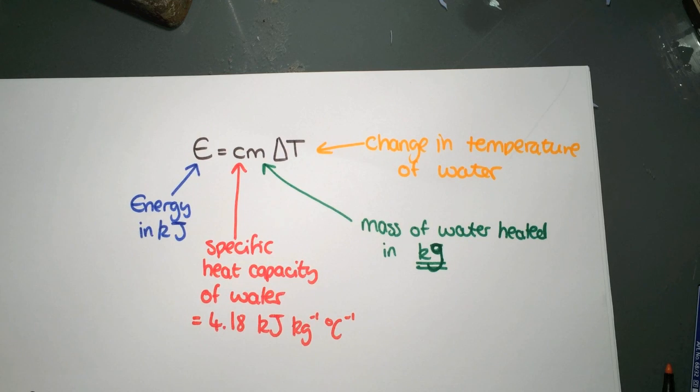The M is the mass of the water that is heated, and this is always in kilograms. This is very important. This is not the mass of the alcohol that is burned or any other substance. It is always the mass of the water.